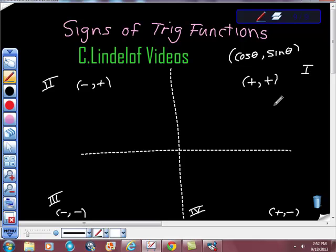So what do we know here? We know that this is the cosine value, it's positive. So we know that cosine theta is positive in quadrant 1. We know that sine theta is positive in quadrant 1. What about tan theta?